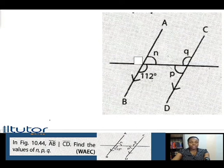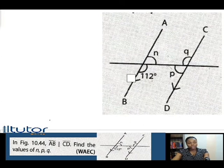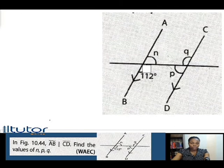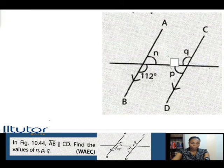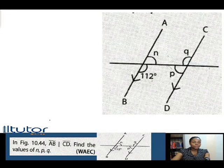At the points of intersection between this transversal line and the two parallel lines, angles have been formed, and there are relationships that exist between these angles. The angle of 112 degrees is alternate to angle Q, and alternate angles are equal. Angle N is alternate to angle P. So once we find angle N, it will be the same thing as angle P. Readily, Q is equal to 112 degrees — alternate angles are equal.